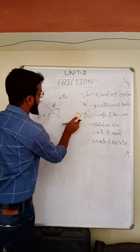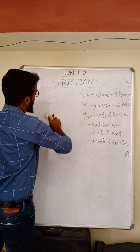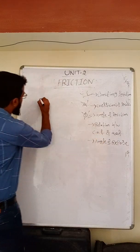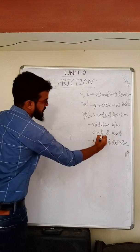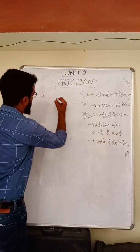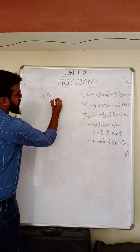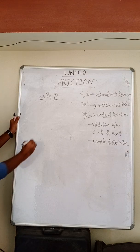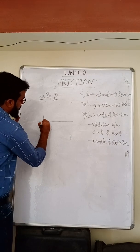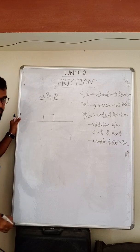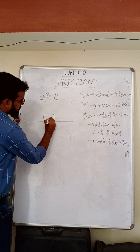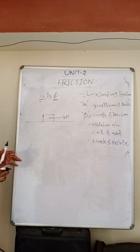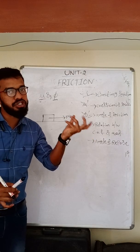The fourth topic is the relation between coefficient of friction (μ) and angle of friction (φ). To derive this relation, consider a horizontal plane with a block on it. Assume the body is moving rightward, so I am applying effort from the left side. As we know, frictional force always acts opposite to the motion of the body, so friction acts leftward. Normal reaction acts perpendicular to the contact surface.